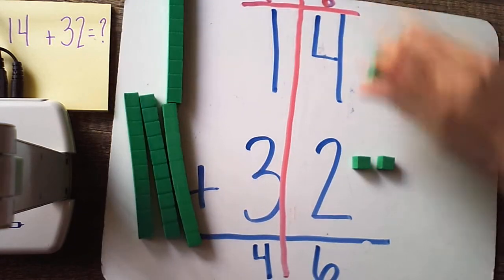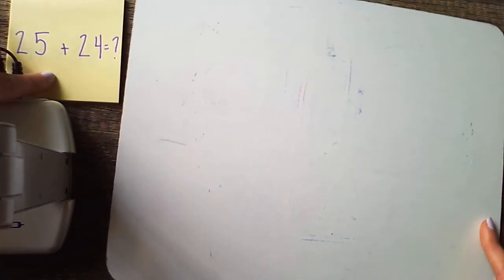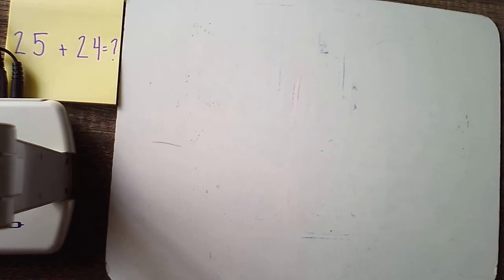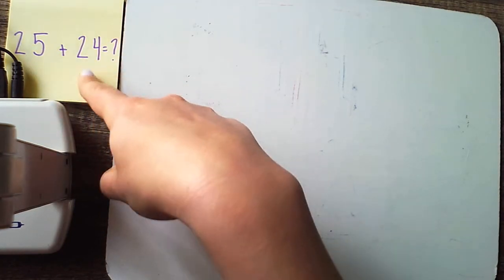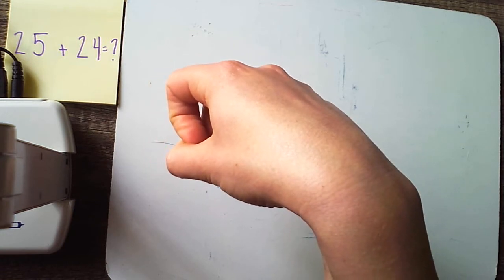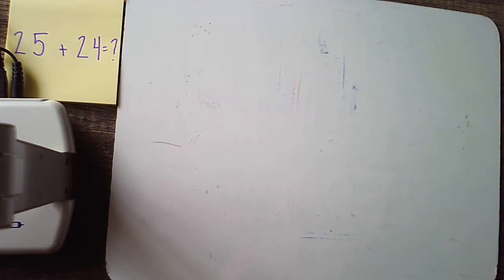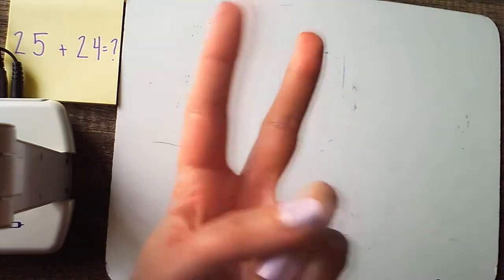Let's try another one. We're gonna clear our board, removing my ones, removing my tens. Our next problem is twenty-five plus twenty-four. I don't have this written out as a story problem, but I could certainly turn it into one. Let's say that you are at the beach and you collect twenty-five seashells and your brother goes around and collects twenty-four seashells, and you want to put your seashells together to figure out how many you have all together. You could certainly use this strategy to help you solve that kind of problem.